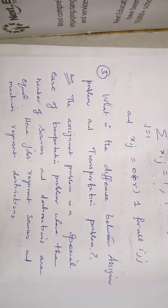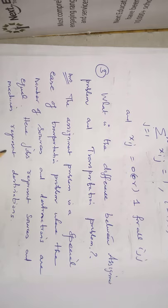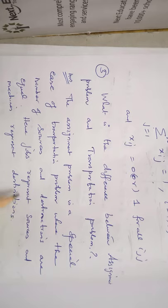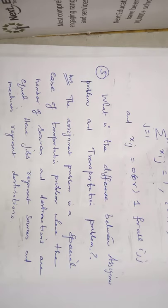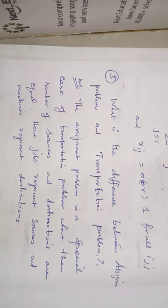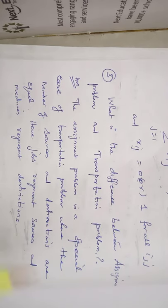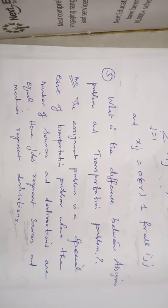For example, if we have four sources then the destinations are also four; if sources are three then destinations are also three. So the number of rows equals the number of columns. Hence, jobs represent the sources and machines represent the destinations. These are the differences between the assignment problem and the transportation problem.